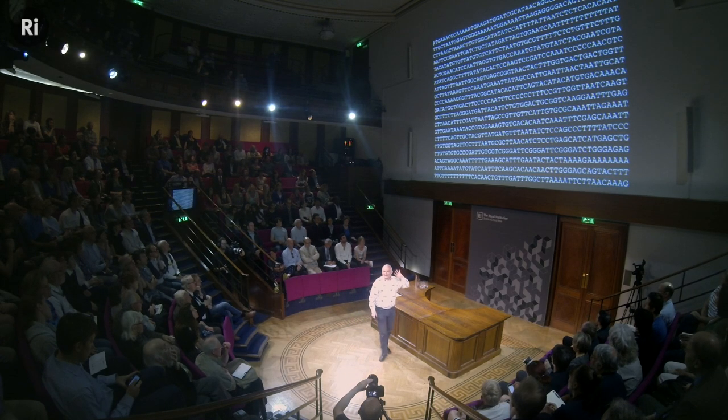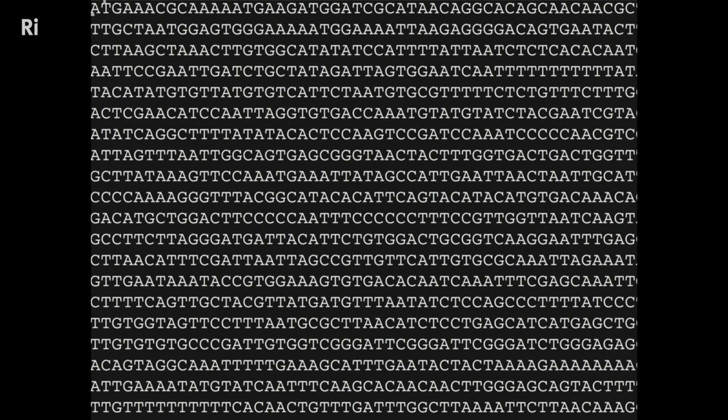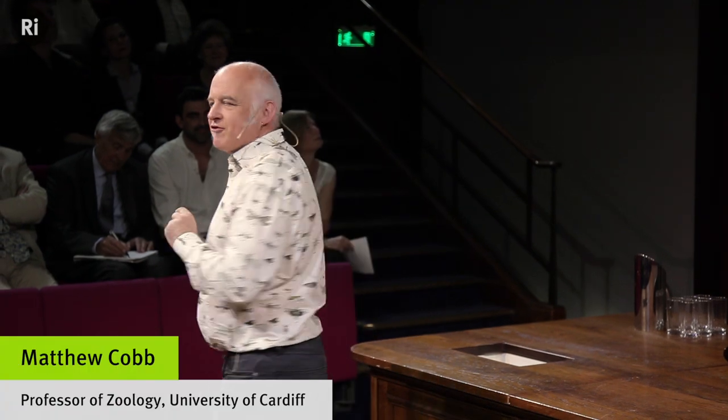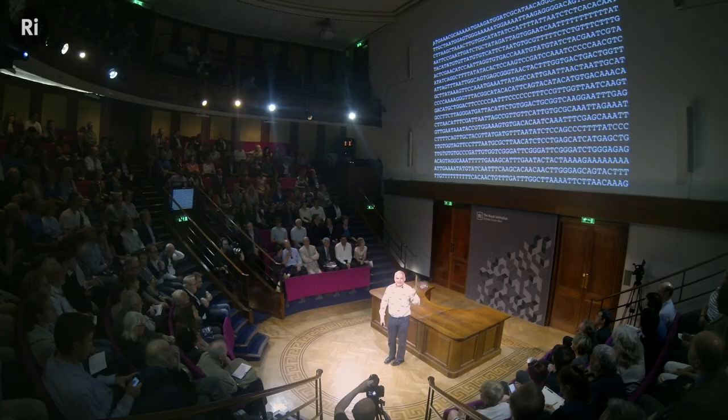This is why I'm here. This is a DNA sequence of a particular gene in a fly, and it's what got me interested in all this. This particular gene is called DUNCE, because when it's mutated, the poor old fly finds it rather difficult to learn and remember things.